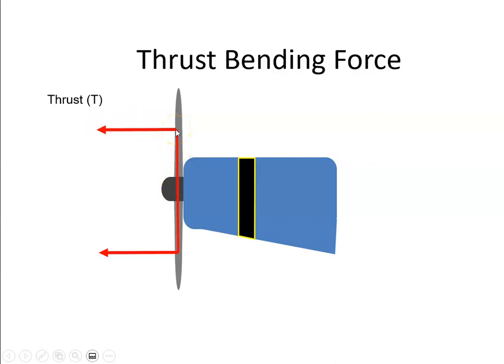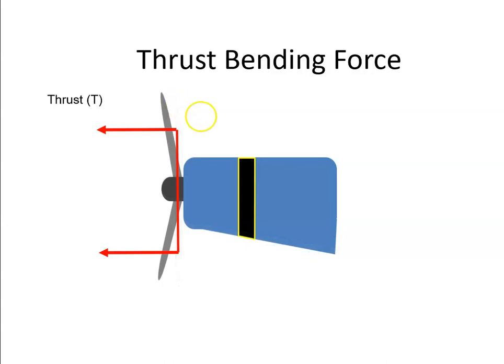That thrust vector is going to cause the propeller blades to bend — they should bend something like that. So that's the thrust bending force.